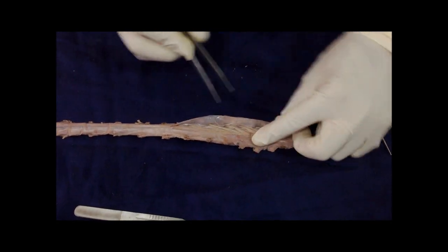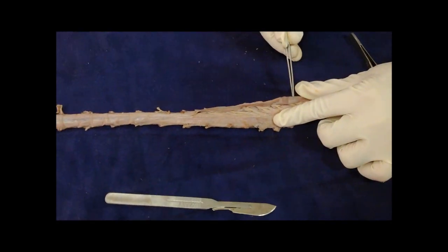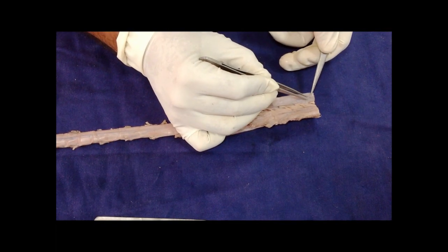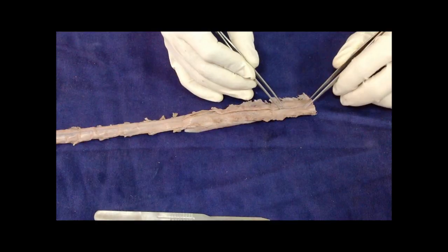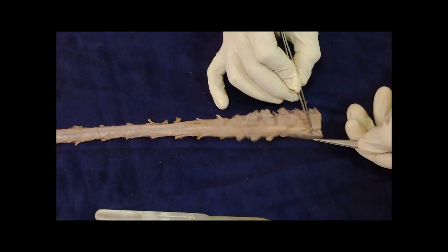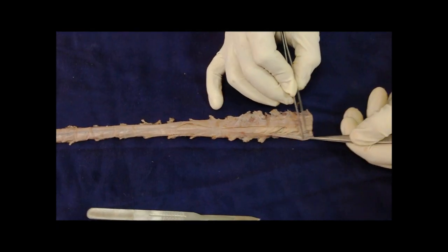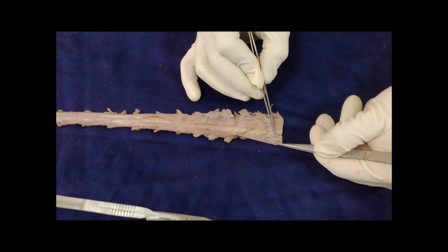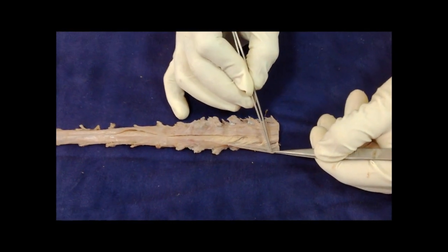Here I can show the arachnoid mater which is closely related to dura. They are so close that it is hard to separate them here. This is arachnoid mater. You can see how thin it is.